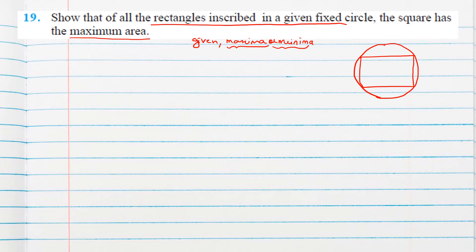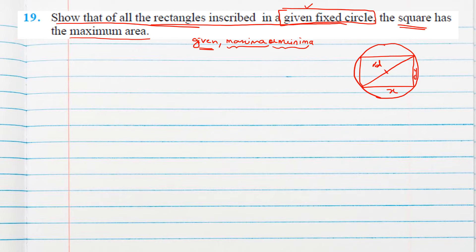From the given fixed circle, the radius or diameter can be treated as constant. Here, suppose x and y are the sides of the rectangle, and d is the diameter of the circle. Since the circle is fixed, d is constant, while x and y are variable.